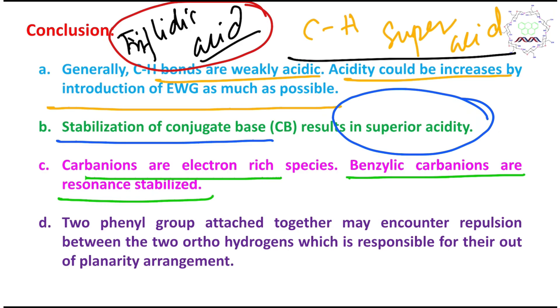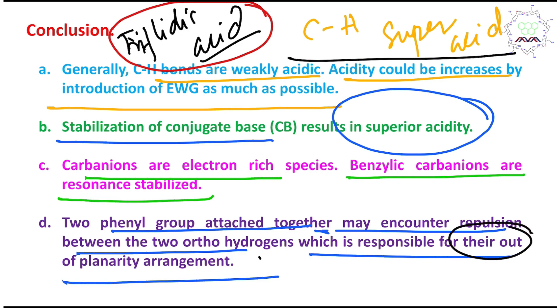The next point is carbon anions are electron-rich species and benzylic carbon anions are resonance stabilized. That's why it's stable because the negative charge is dispersed or delocalized over this phenyl ring. The last point is two phenyl groups attached together may encounter repulsion between these two ortho hydrogens which may be responsible for their out of planar arrangement and if they are out of planar, they can't participate in resonance because the p orbital which carrying the negative charge, I mean, benzylic position cannot delocalize if it is not in a same plane arrangement.